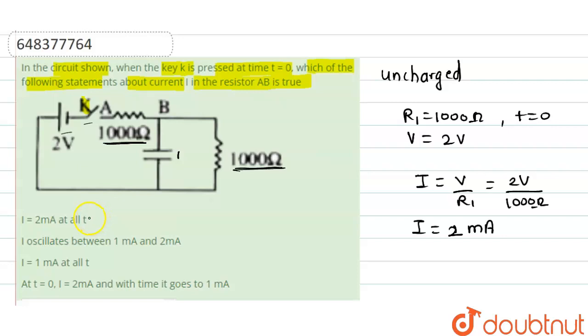So 2 milliampere at time t equals 0 is given in the first option. So we have to calculate the current after time t equals 0 also. Now this capacitor is absorbing the charge and charging itself. Now one point there will be reached such that this capacitor will be fully charged and now this capacitor will not absorb all the charges flowing in the circuit.